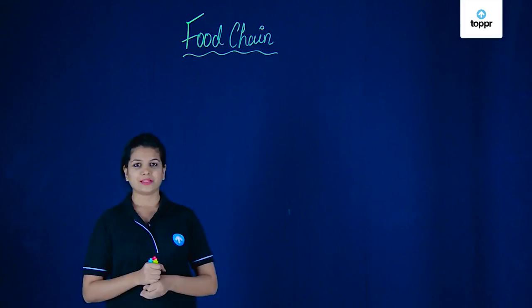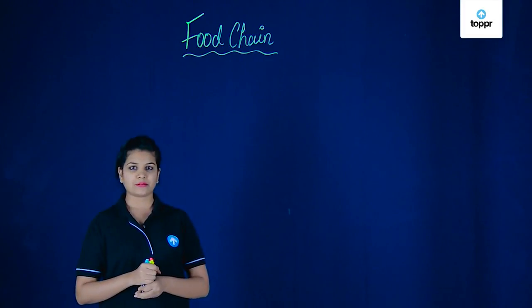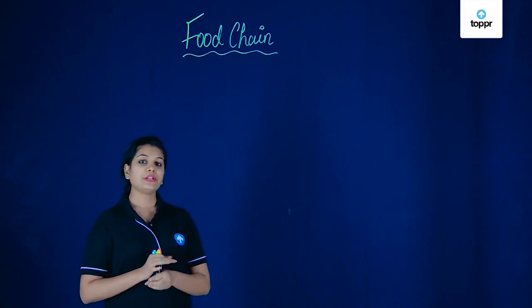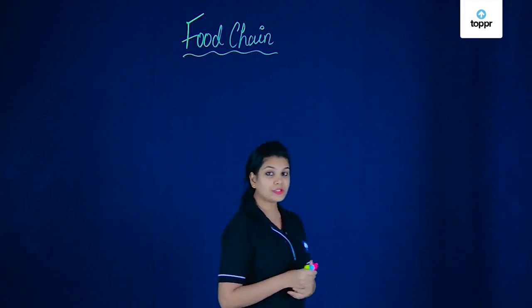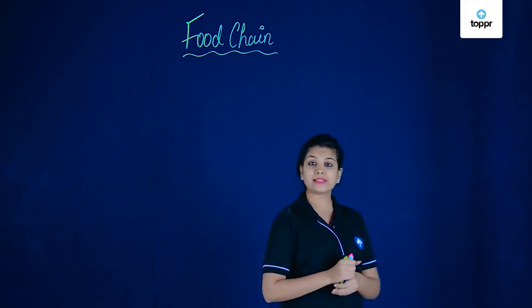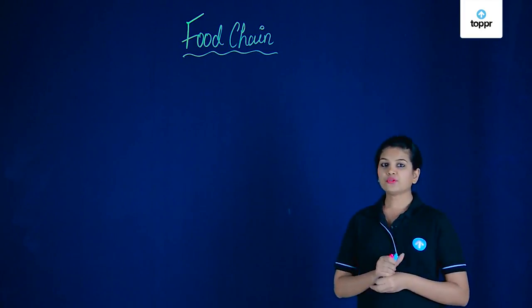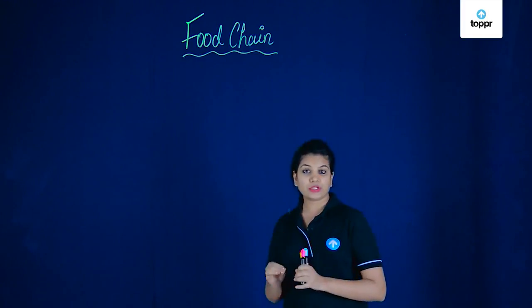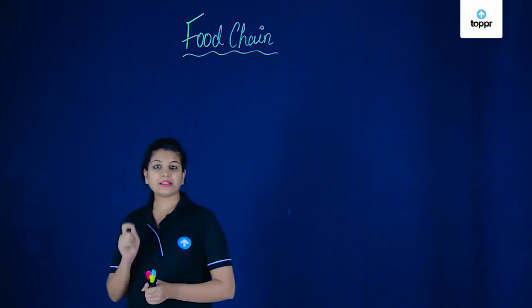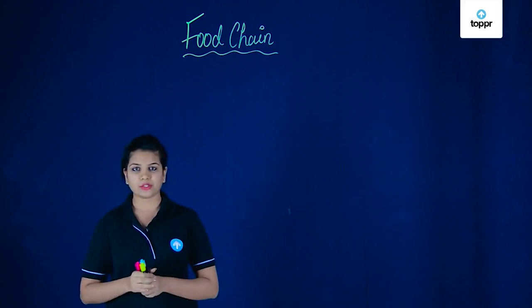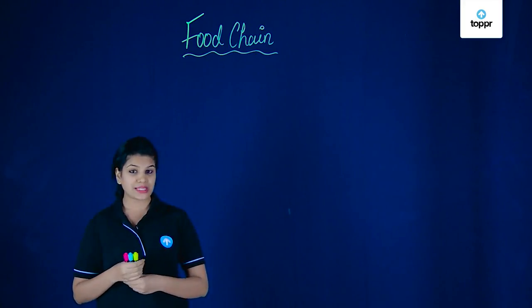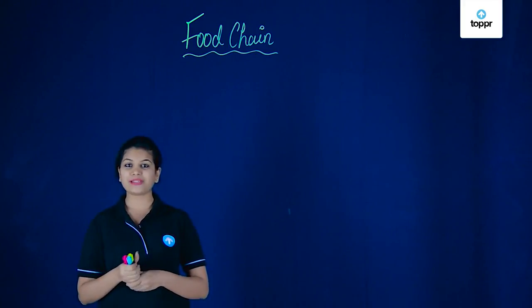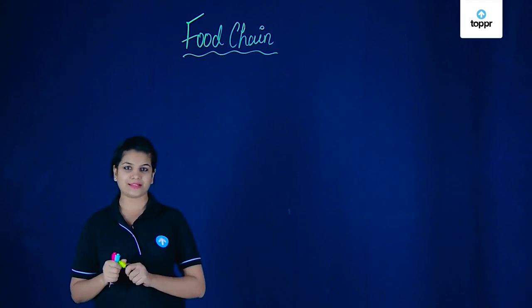Hey guys, let's learn about food chain in this lesson. When we learn about the food chain, how do we define it? We define a food chain as the series of events in which each living organism obtains its food in its environment. This may sound complex, so let's take an example and understand it.